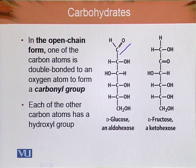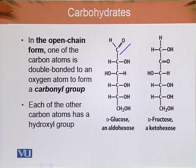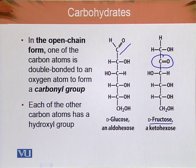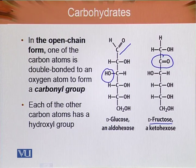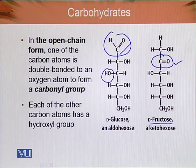This is the structure of D-glucose, which is an aldohexose. We will define why it is called 'aldo' and 'hexose' in the next slide. Similarly, in D-fructose, the carbonyl group is attached at the second carbon, while the remaining backbone consists of single-bonded carbon atoms. Each of the other carbon atoms has a hydroxyl group — that is why these are called polyhydroxy compounds having an aldo or keto group.